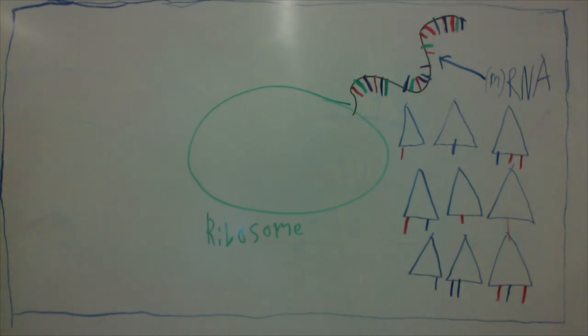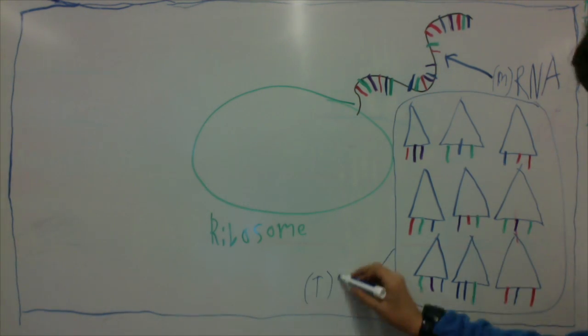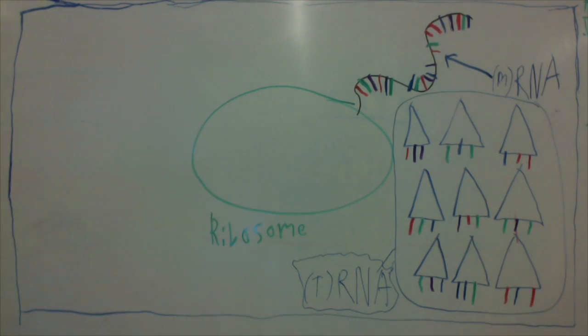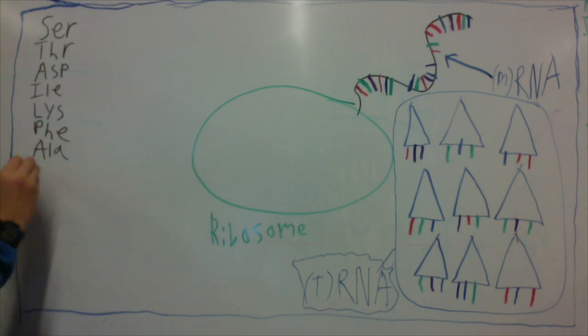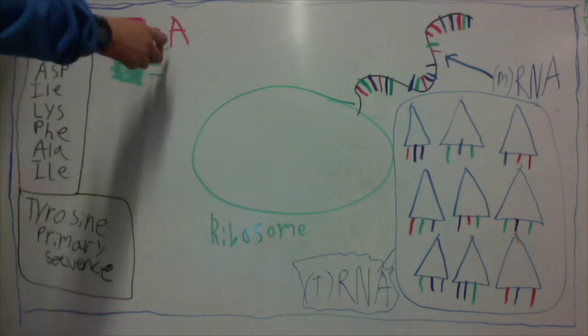Now, to do this, the ribosome will need the help of these tRNAs, which look rather like triangles. Each amino acid is coded for by a set of three letters in the genetic code known as codons.